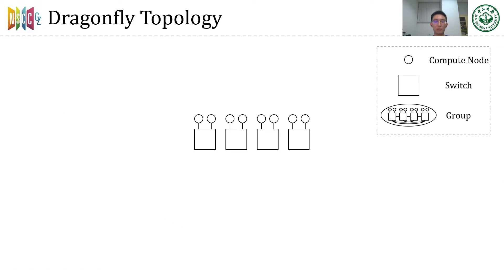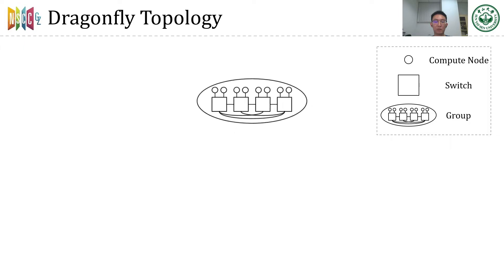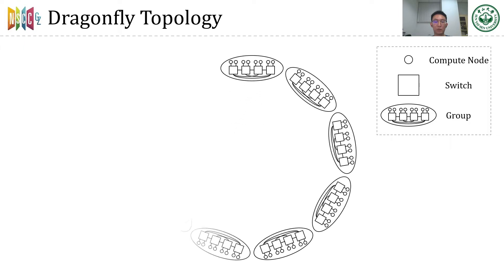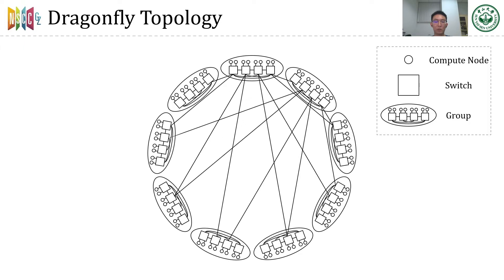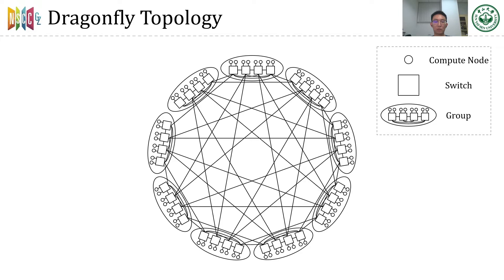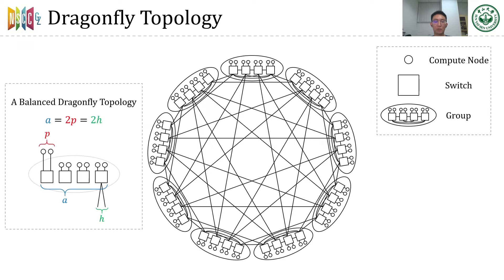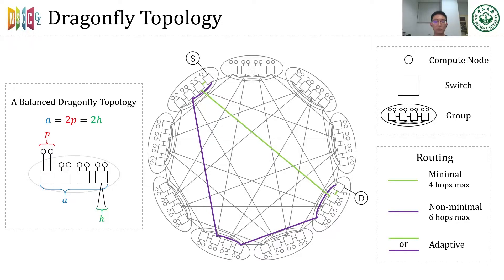A typical Dragonfly Topology consists of multiple groups, and each group consists of some fully connected switches. If we think of a group as a larger virtual switch, all the groups are also fully connected. We call the links across the groups global links, and call the links in the group local links. A load-balanced Dragonfly Topology should satisfy the condition that the number of switches in a group is twice as large as the number of compute nodes connected to one switch, and twice as large as the number of links connected to other groups in a switch. As for routing, there are three kinds mainly used in Dragonfly Topology: minimal routing, non-minimal routing, and adaptive routing.